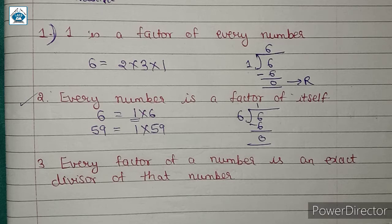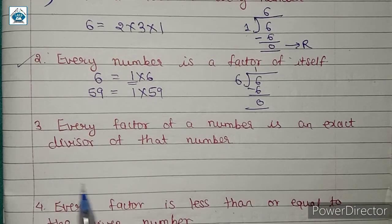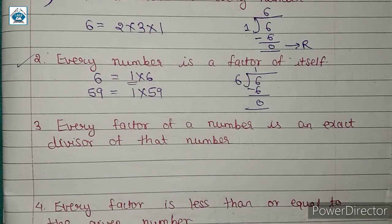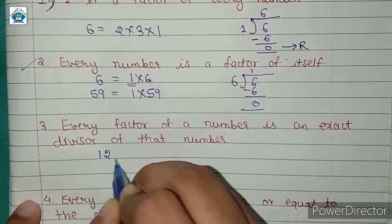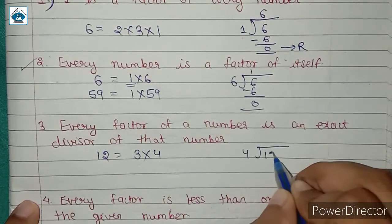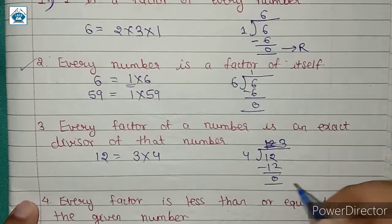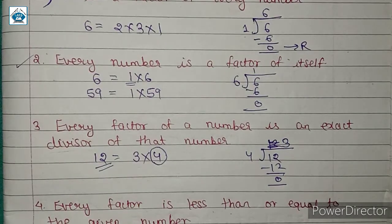The third conclusion is: every factor of a number is an exact divisor of that number. This is the definition of a factor — for a number to be a factor of any number, it must divide that number exactly. For example, 12 equals 3 multiplied by 4. When we divide 12 by 4, we get 4 threes are 12 with remainder 0, so 4 is an exact divisor and factor of 12.